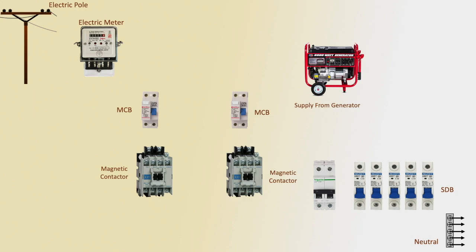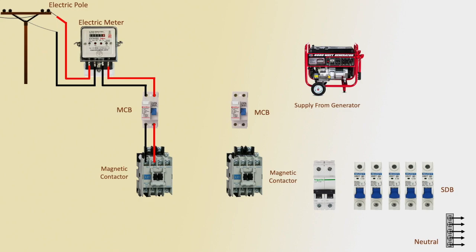The fast input line goes to the energy meter — positive and negative. The other line goes outgoing to the DP circuit breaker input connection, then outgoing from the circuit breaker to the magnetic contactor input connection at L1 and L2.